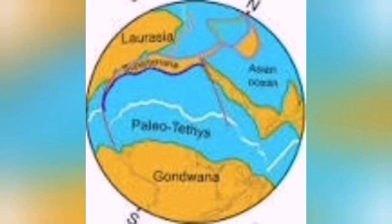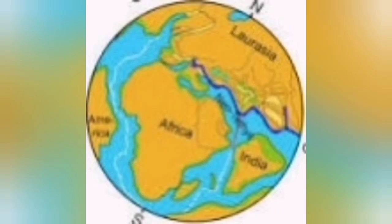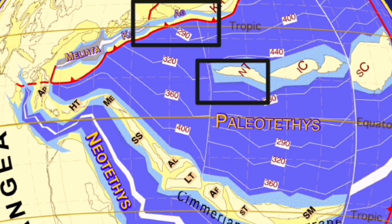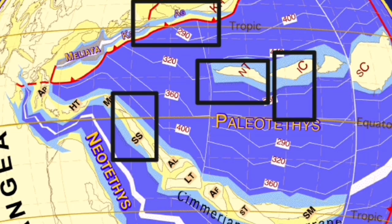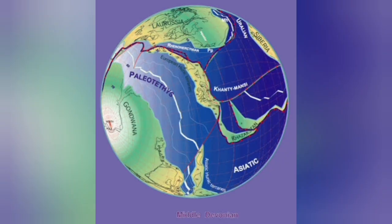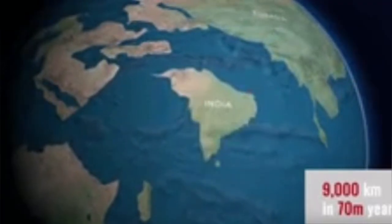The Iranian plateau began forming when the Paleo-Tethys Ocean was closing down due to the breakdown of Gondwana. As Gondwana broke apart, it created arcs of islands — like what we see in Indonesia today. These island arcs eventually joined together, from Africa, which is the remnant core of Gondwana, all the way to Eurasia, ending up as the solid mass we call the Iranian plateau.